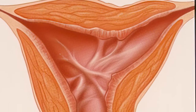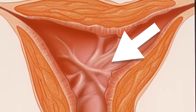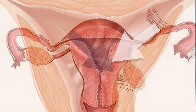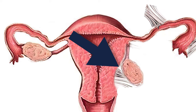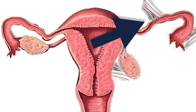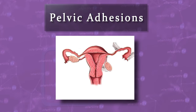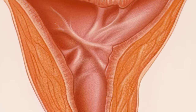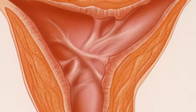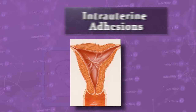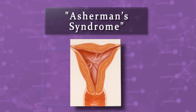First, some definitions and clarifications. Today, we are talking about scar tissue inside the uterus, which is completely different from scar tissue outside of the uterus. Scar tissue outside of the uterus is referred to as pelvic adhesions. Scar tissue inside of the uterus is called intrauterine adhesions. You may also hear it referred to as Asherman's syndrome.